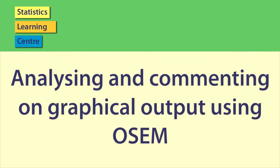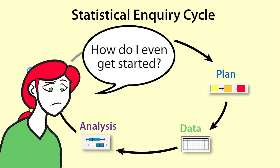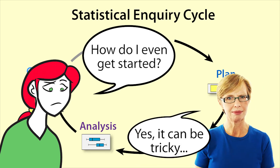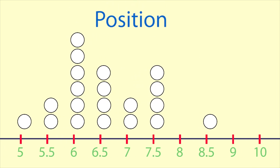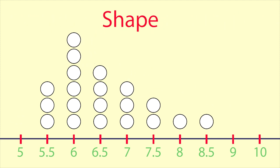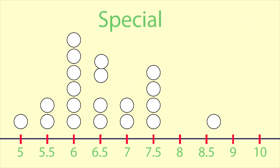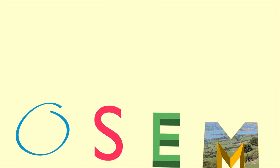Analyzing and commenting on graphical output using OSIM. Often in a statistical inquiry we need to analyze graphical output, and it can be difficult to know what to say. When examining graphs we look at four main things: position, spread, shape, and special. Within each of these, the OSIM acronym can help.